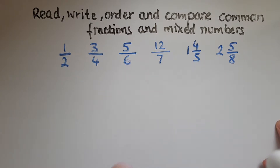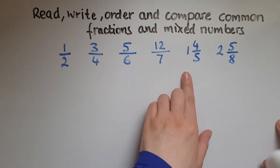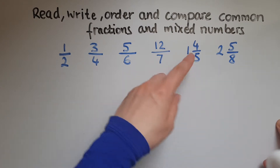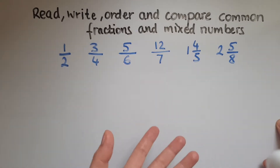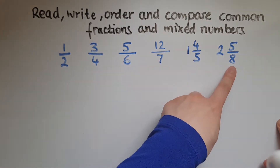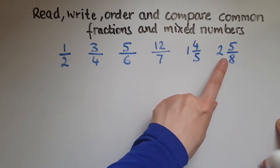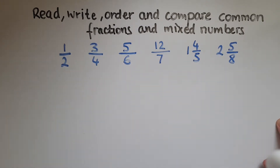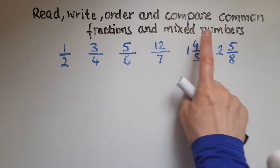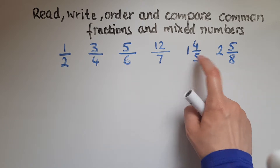There is also a difference with the last two. We've got 'one and four fifths' — that means a whole one, maybe a whole pita and four fifths of a pita. Or two pounds and five eighths of a pound. The number in front shows how many whole parts we have. This is why we call them mixed numbers: because we've got whole numbers and fractions.